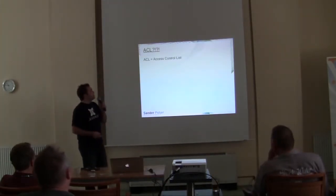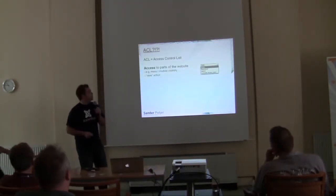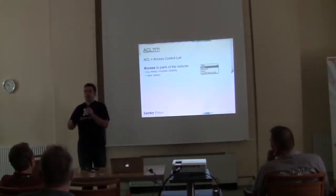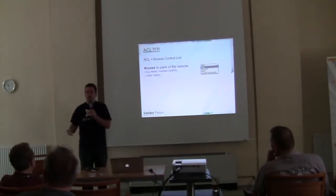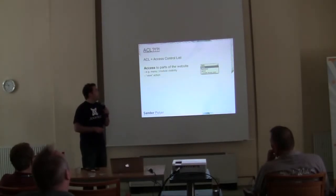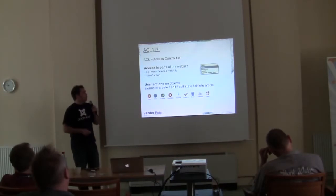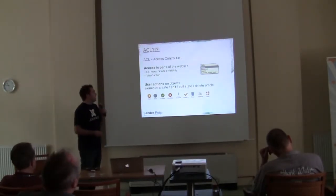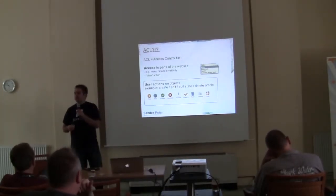What is ACL? ACL stands for Access Control List. In Joomla we can divide it into two different areas. One area is to allow access to certain information on the website — more based on the front end — so who's able to see which article, which menu item, which module. The other part is user actions on objects: who's able to create items, delete items, or contact persons, etc. This is the area we're mainly focusing on today — how you can get those user actions in your extensions.